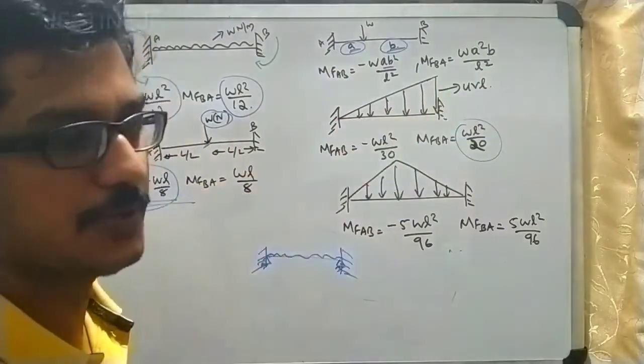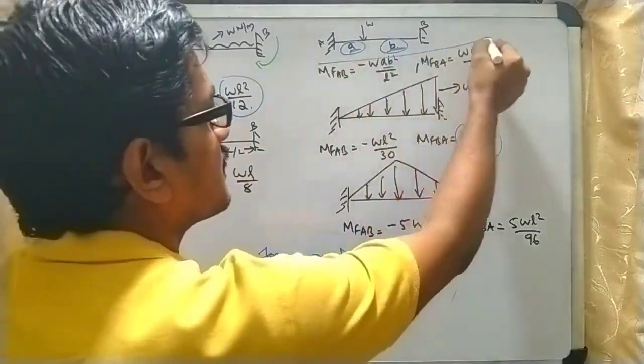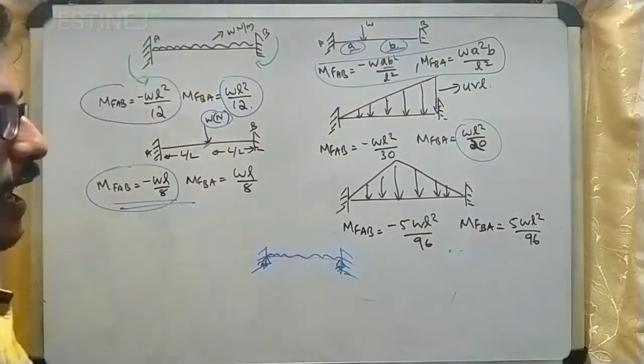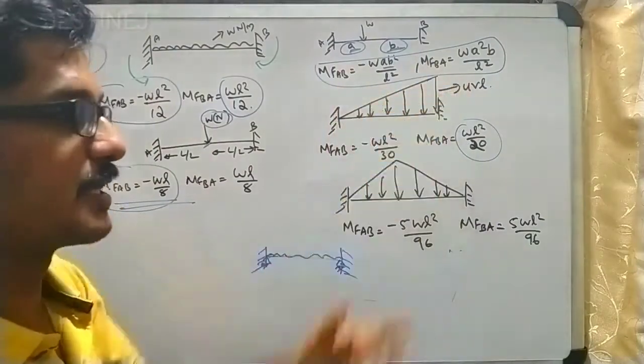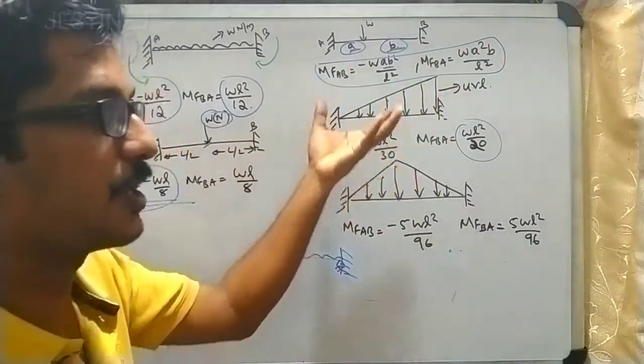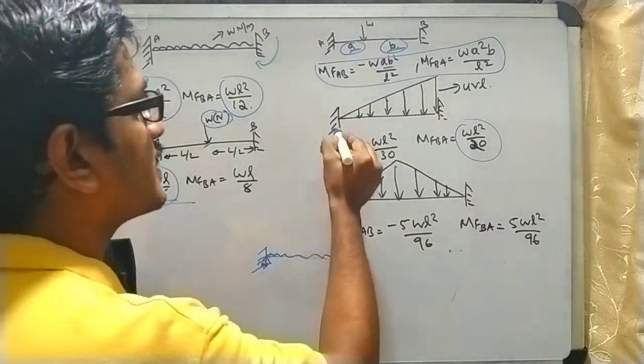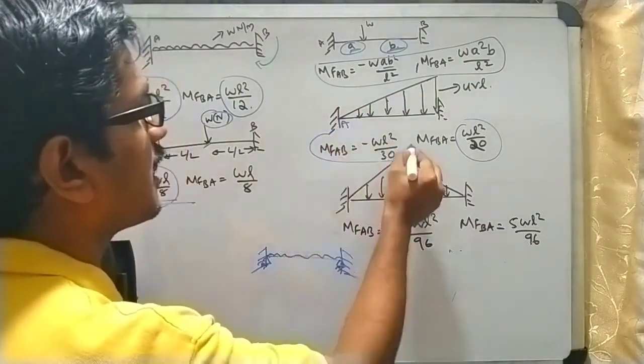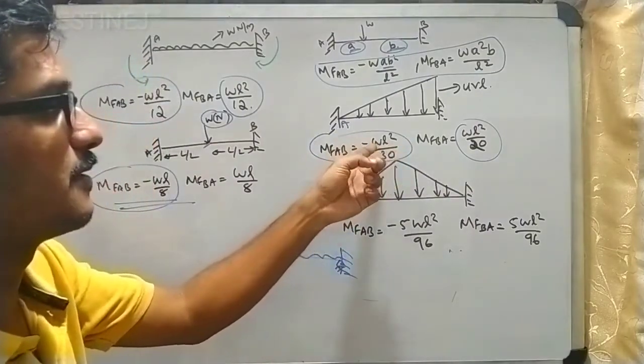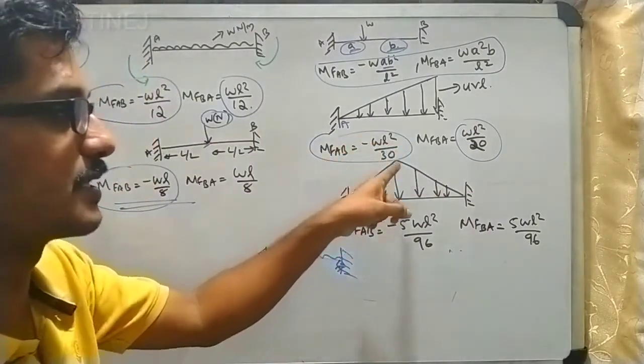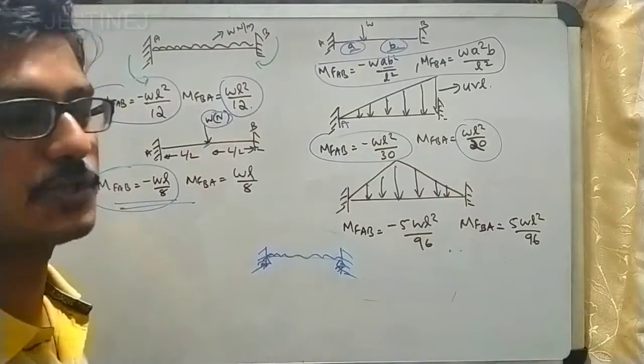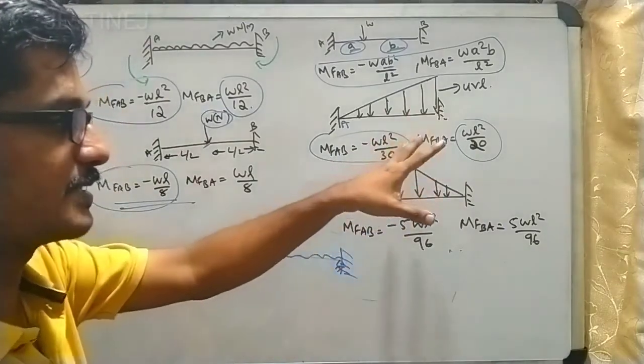When a UVL is acting over the beam, when a UVL that means a uniformly varying load is acting, then the fixed end moment values MF AB is equal to minus WL square by 30, and here it is WL square by 20. This is the condition for when a UVL is acting.